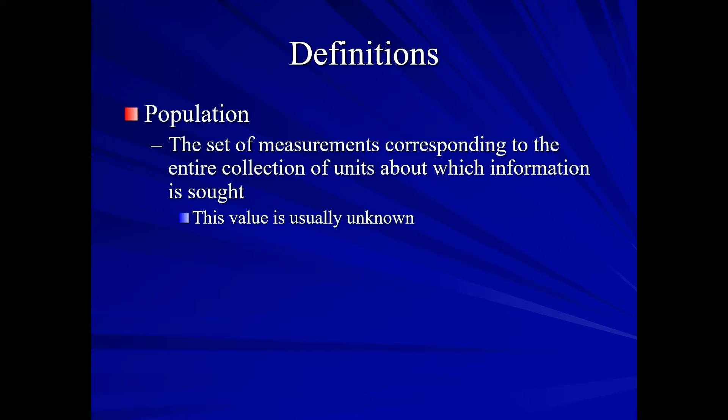Our population. This is the set of measurements that corresponds to the entire collection of units about which information is sought. And this value is usually unknown. Now, when we think of population, we generally think of a large, very large value. And if we were to shrink our population to a very small set of individuals, perhaps just the population of an entire class of students, well, that population value may be known. However, as we increase the size of our population, that value becomes harder and harder to be known. So, we typically say that our population value is unknown.